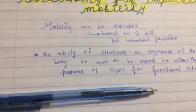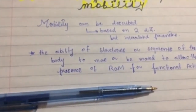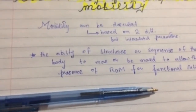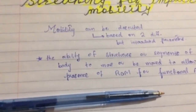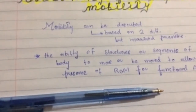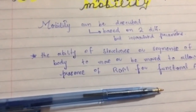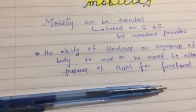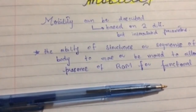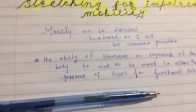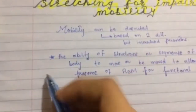Simply, the ability of any structure of the body is how they move and are moved — whether they complete the normal ROMs for normal functional abilities. This basically includes the daily activities we perform, like if we grasp a cup or pick up a pen.